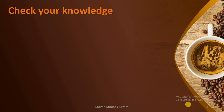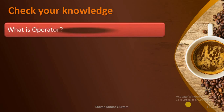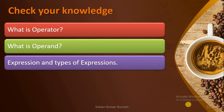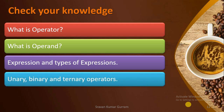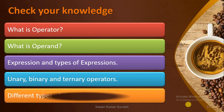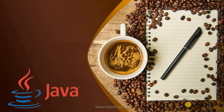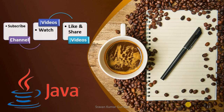Check your knowledge from this video: what is an operator, what is an operand, what is an expression, and what are the different types of expressions. What is a unary operator, what is a binary and ternary operator, and what are the different types of operators provided by Java. If this video is useful to you, please subscribe to the channel, watch, like, and share the videos. Thank you.